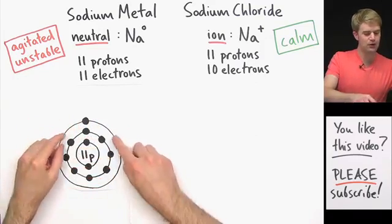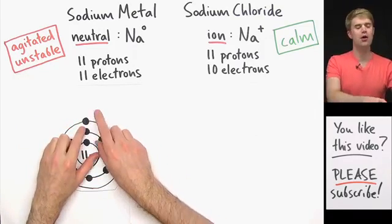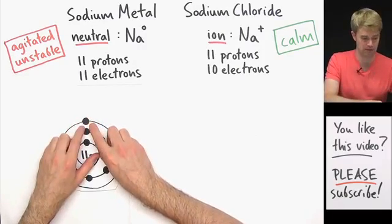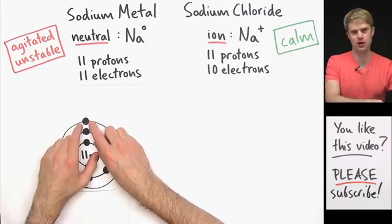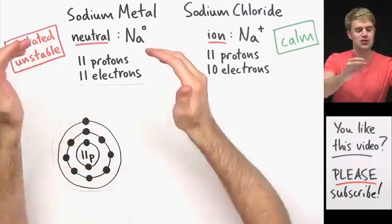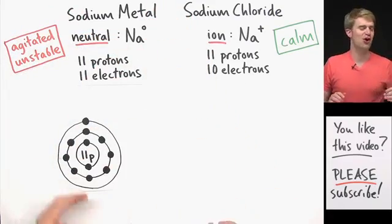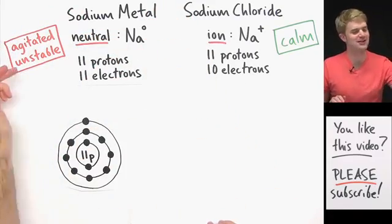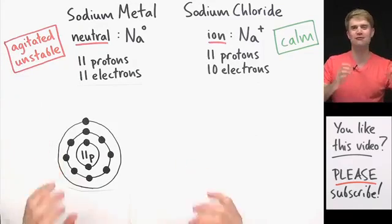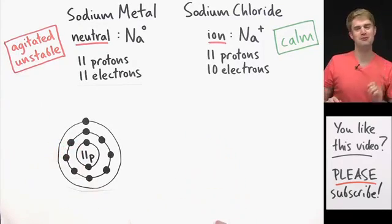Now take a look at this. In the outermost energy level there is one and only one electron. It is this one electron that's the reason why sodium metal and the atoms in it are so agitated, so unstable, and why they react violently when you put them in water.